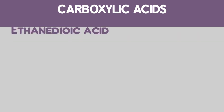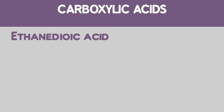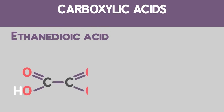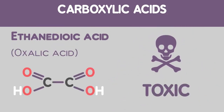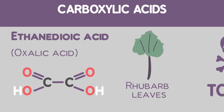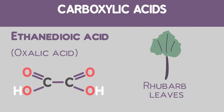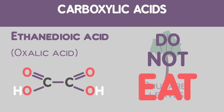Then, ethane diaric acid. Ethane diaric acid, commonly called oxalic acid, is toxic, and is found in rhubarb leaves, and that is why we should never eat them.